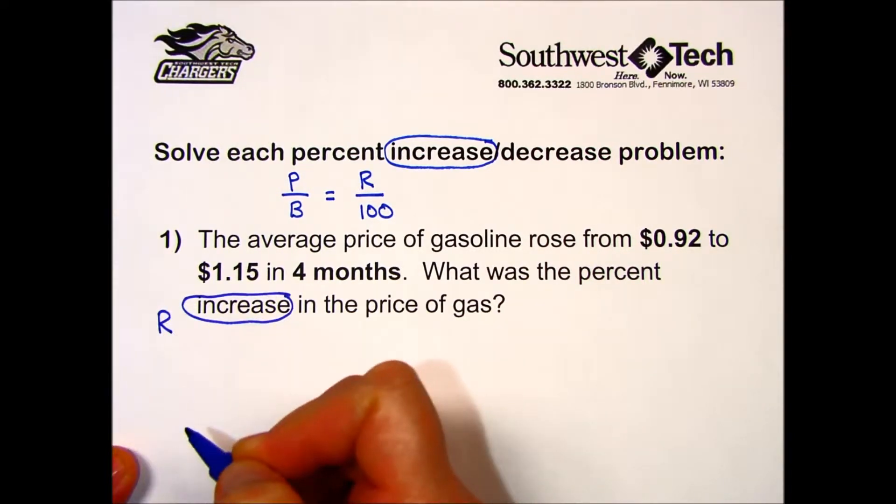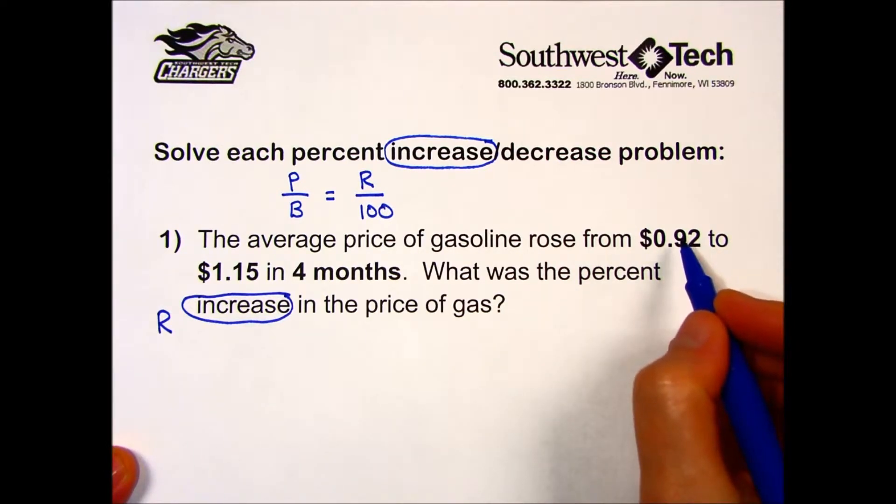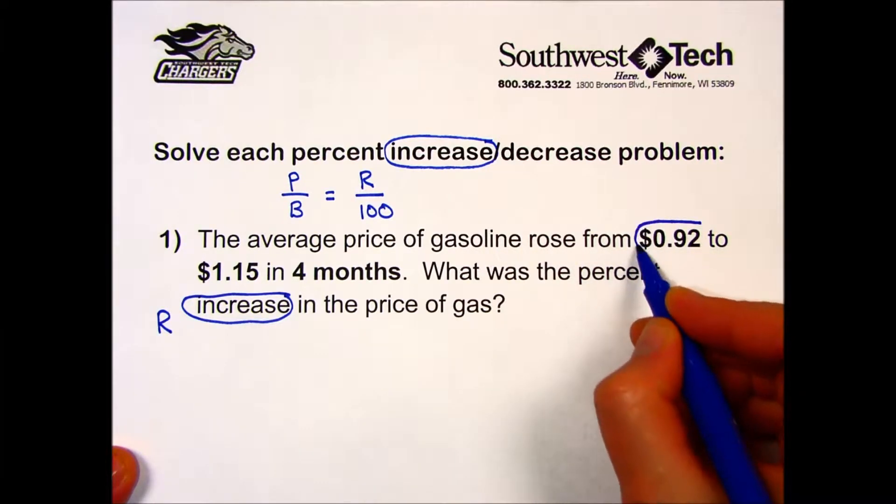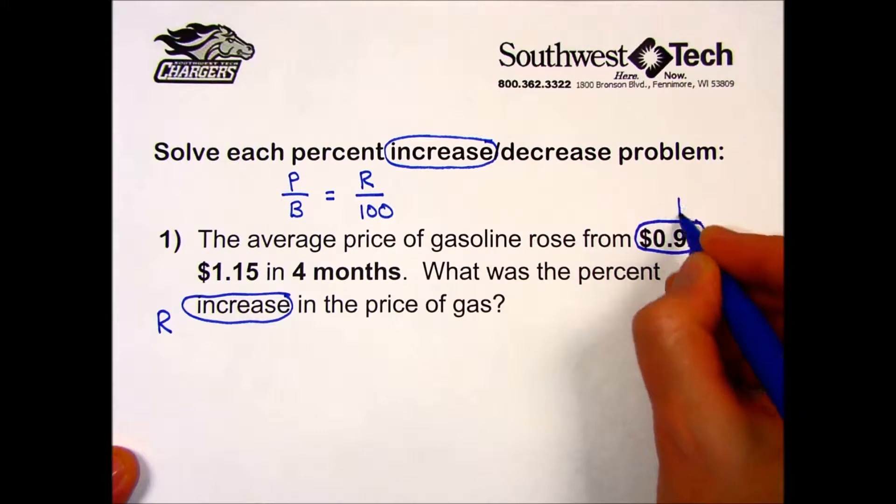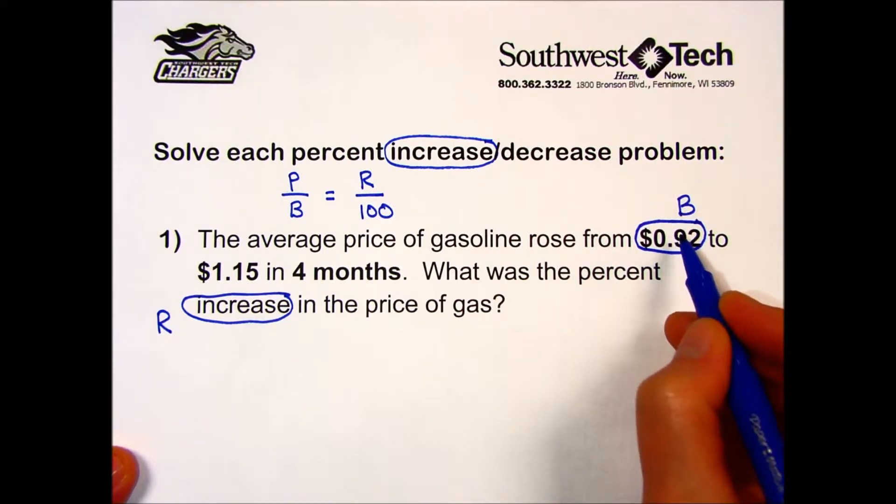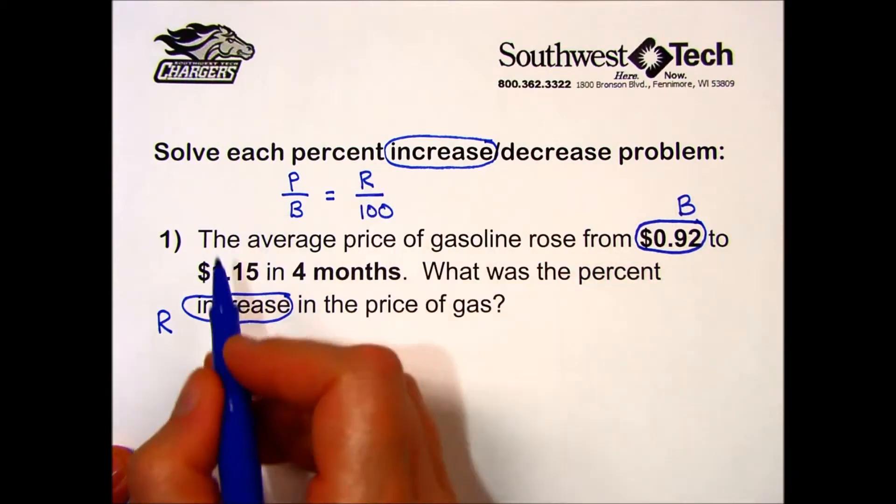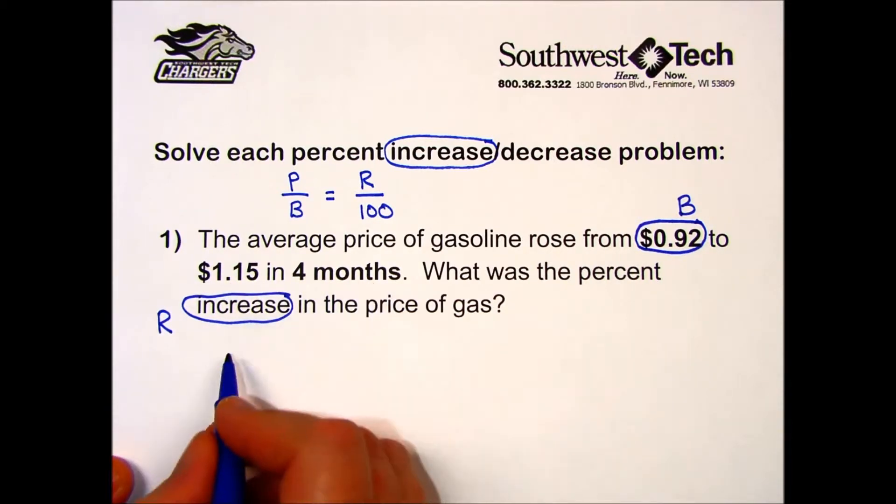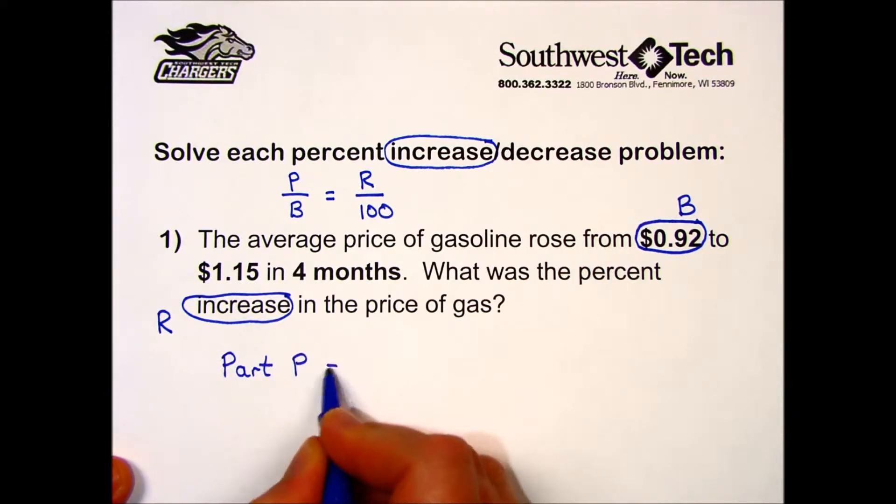When you have problems that go from one value to another, the number that came before the change is your base. It's a good thing the B matches for both words. The number that comes afterwards is the current value, and this took four months.